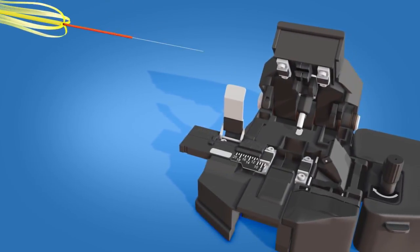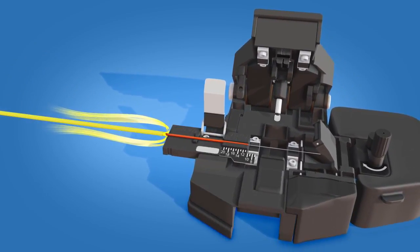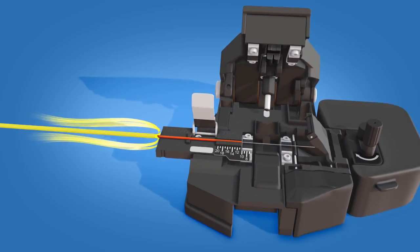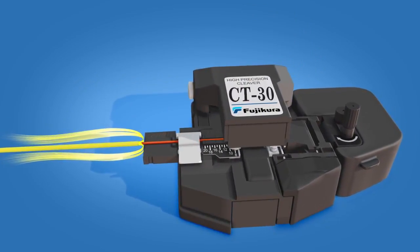Place the fiber into the CT30 cleaver at the 10.5 mm cleave length. Close the clamp. Push the cutting lever downward to cleave the fiber.